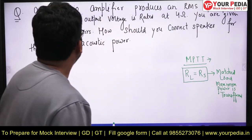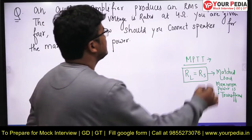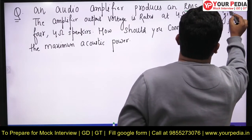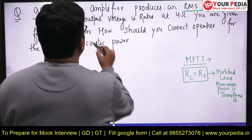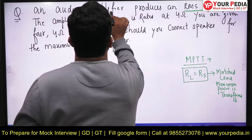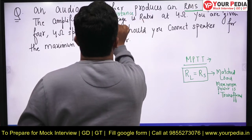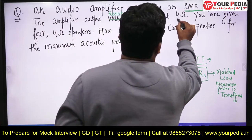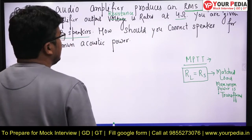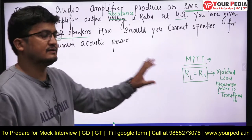The question was: an audio amplifier produces an RMS output of 20 volts — so it's an RMS value, which we can consider as a fixed value. The amplifier output resistance is rated at 4 ohms. You are given four 4-ohm speakers. How should you connect the speakers for maximum acoustic power?